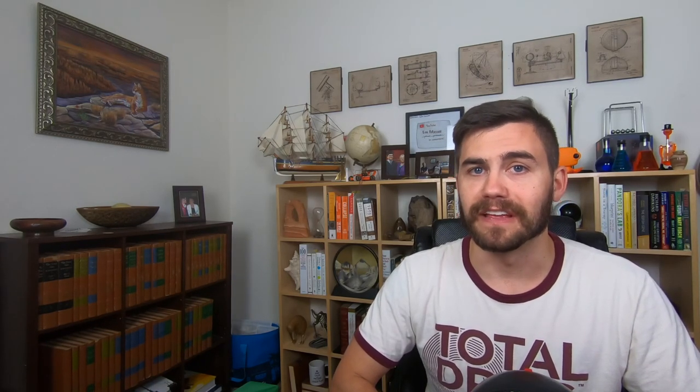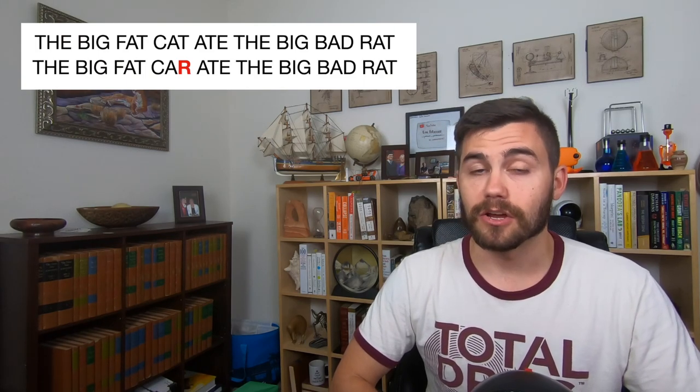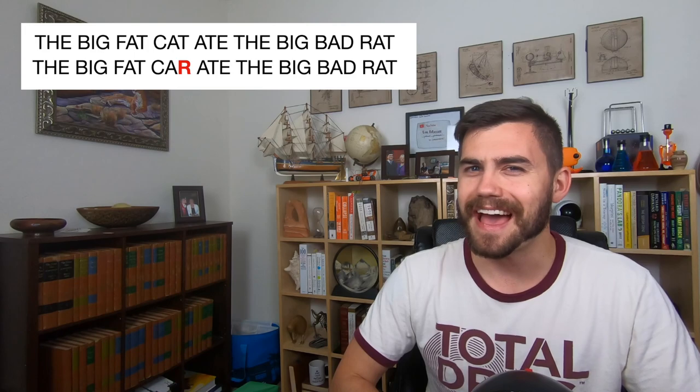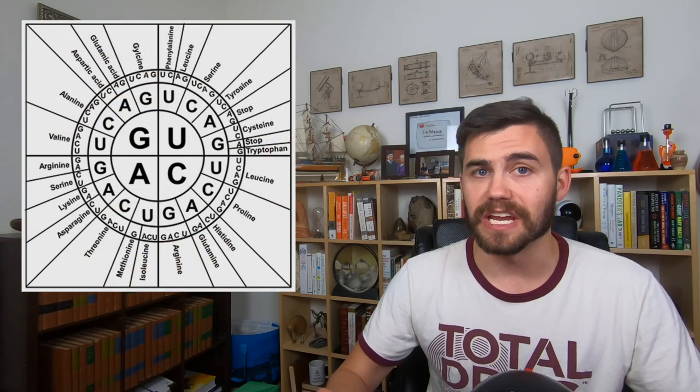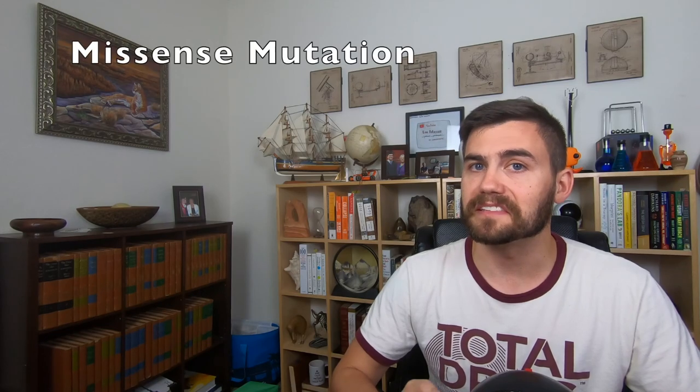However, if we substitute differently, the original sentence changes to the big fat car ate the big bad rat. That doesn't make any sense. If the equivalent were to happen to our messenger RNA, then that codon would be asking for a different amino acid. For example, instead of CAG, which codes for glutamine, it changes to CAC, which codes for histidine. One amino acid out of the dozens, hundreds, or thousands that make up a protein may have a catastrophic effect or a mild effect or a positive effect. It's impossible to predict. But in any case, when a single amino acid in a protein is altered because of a mutation, it's called a missense mutation.